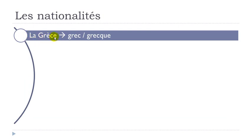La Grèce. I will put each time the masculine form for the nationality — grec — and the feminine form here — grec. So you get the country, la Grèce, and then grec for the masculine form and grec for the feminine form. You write them differently but if you listen carefully, grec, grec, you pronounce them the same way.